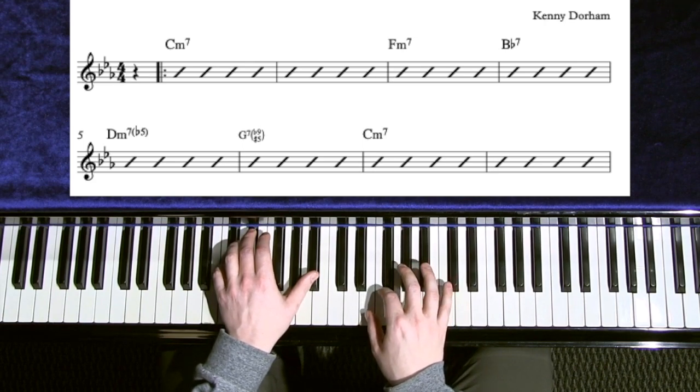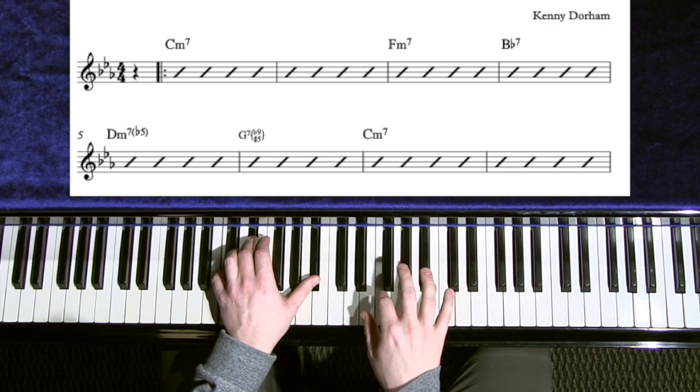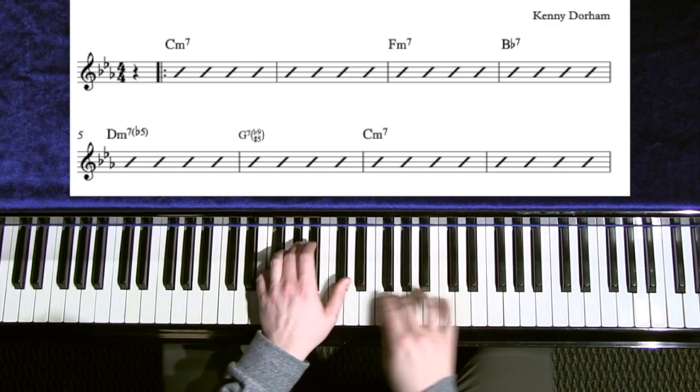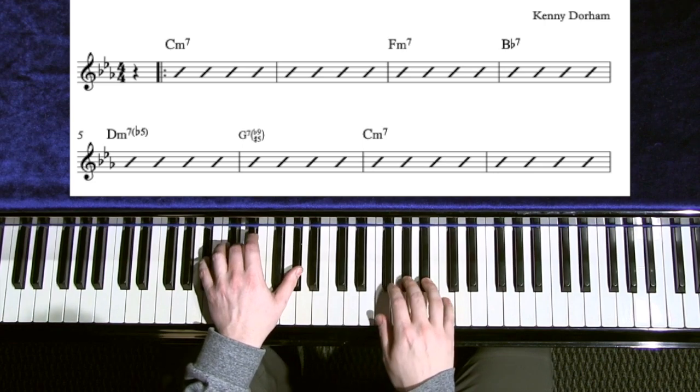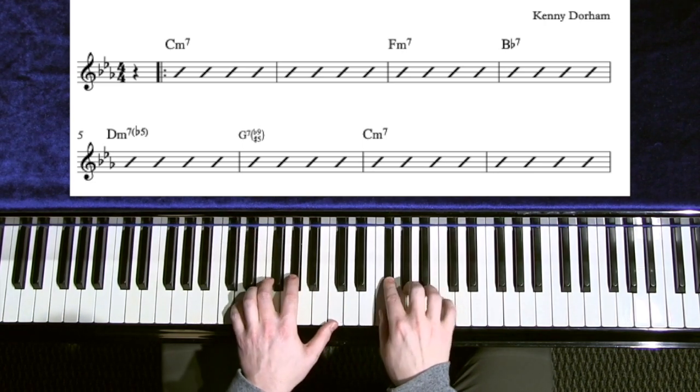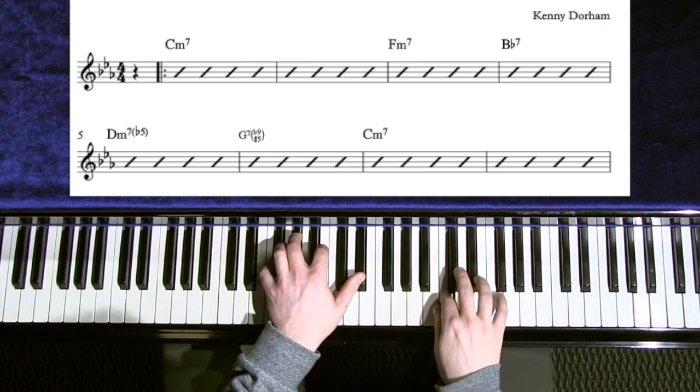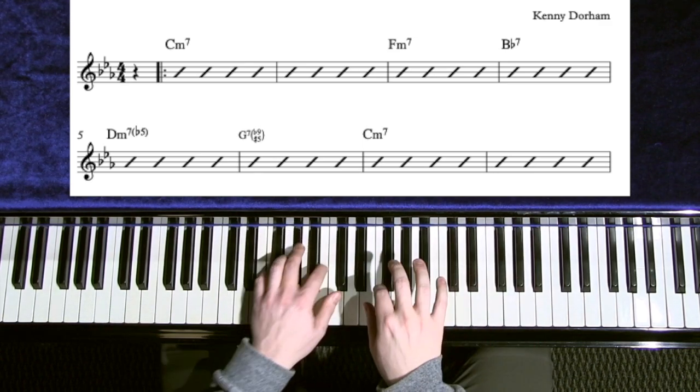Here's the upper approach. Here's the F minor. Here's the D flat 7. Here's the D half diminished. Here's the G7 altered. And then here's the C minor.